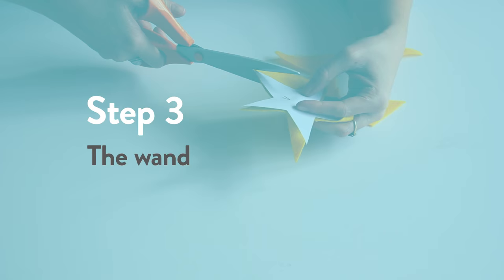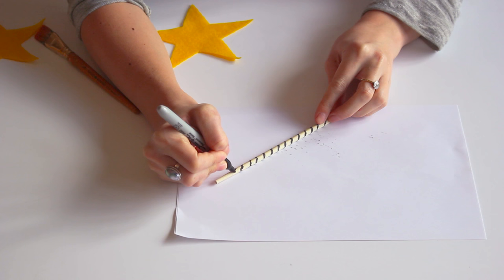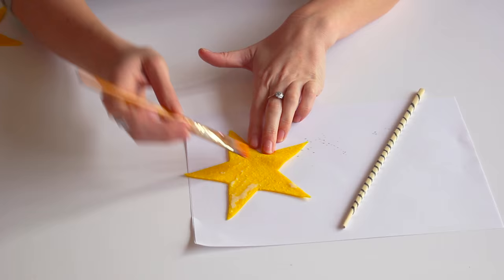The wand. Cut out two stars like this. Take a chopstick or sturdy straw and draw lines on. Use plenty of glue to make your star.